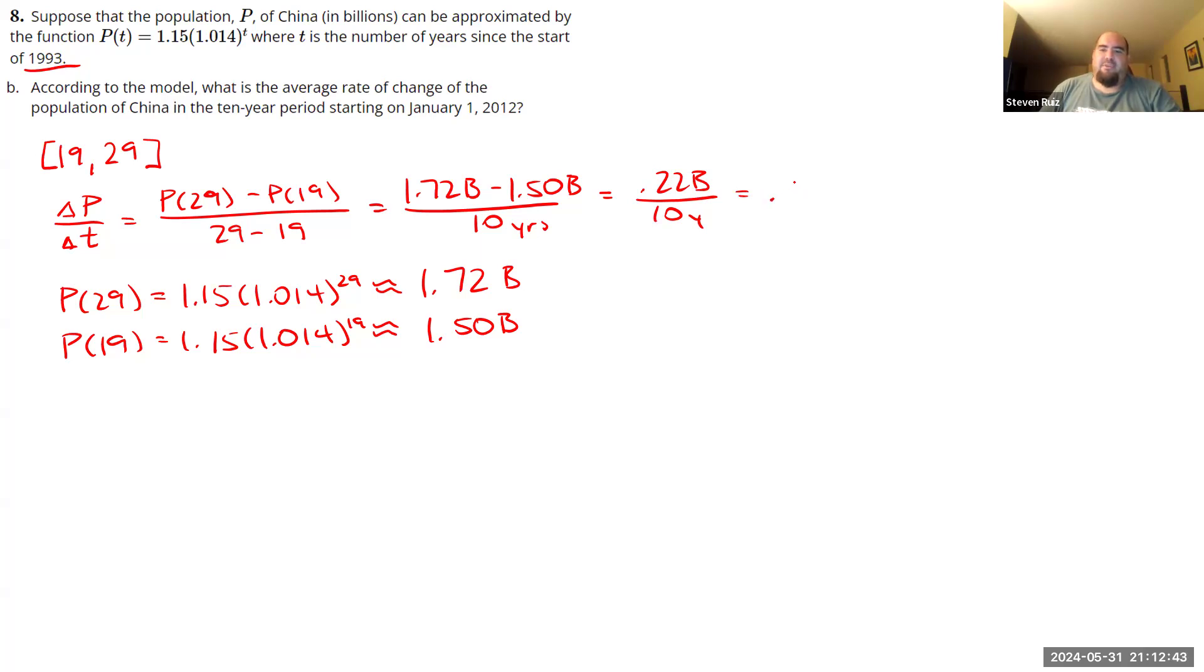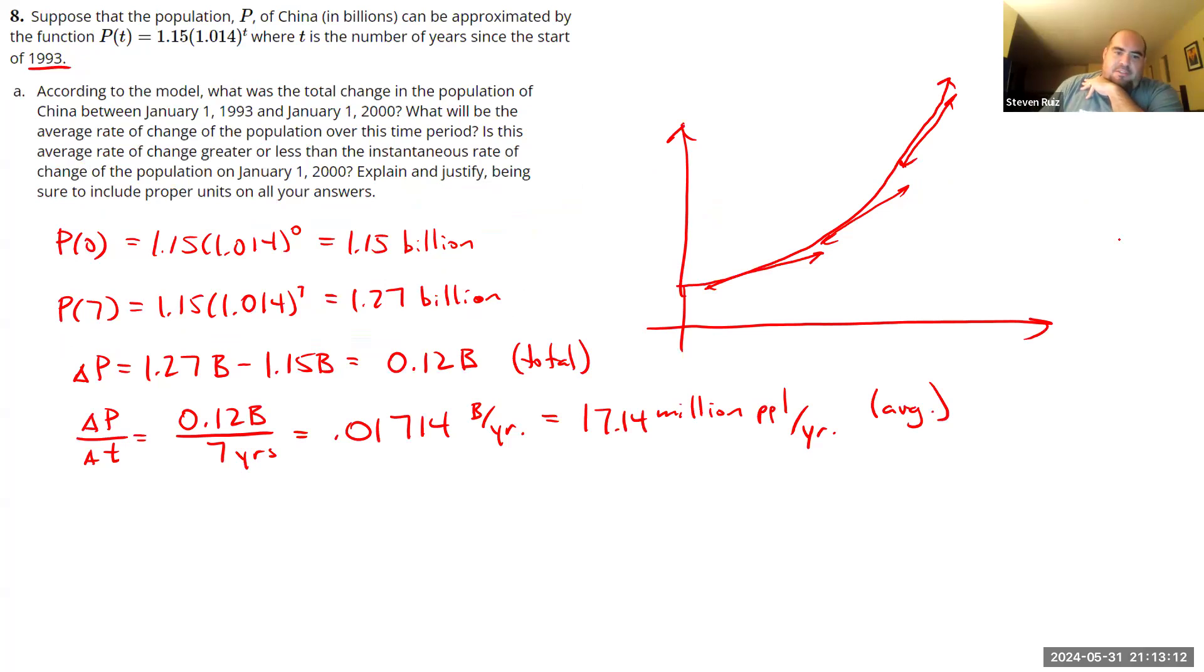Or again, we'll do some billions and millions, 0.022 billion people per year or 22 million people per year. So this will help us maybe give it a little more convincing of an argument for our last part of question A. So our average rate of change here is 22 million per year over this later interval as opposed to our average rate of change in this earlier interval, which was 17.14 million people. So hopefully this gives you a little more convincing that when we have an exponential function like this, as our values of time get larger, our instantaneous rates of change are going to keep getting larger as well.